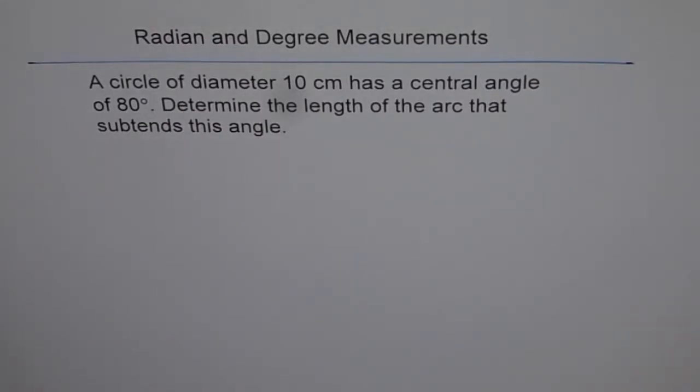Here is another test problem on radian and degree measurements. A circle of diameter 10 cm has a central angle of 80 degrees. Determine the length of the arc that sustains this angle.